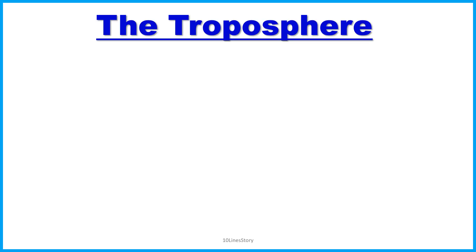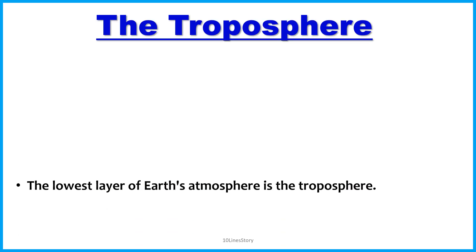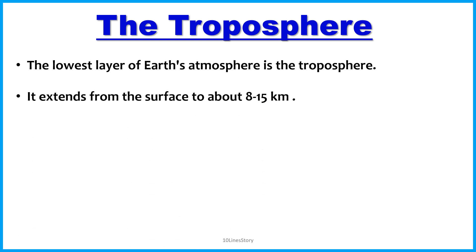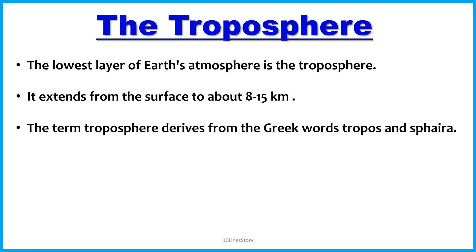Welcome back to Tell and Story Channel. Today's topic is the troposphere, the lowest layer of Earth's atmosphere. It extends from the surface to about 15 to 18 kilometers. The term troposphere is derived from the Greek words tropos and spira.